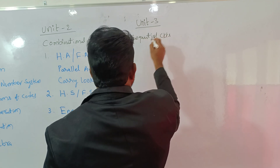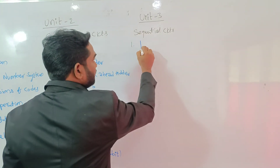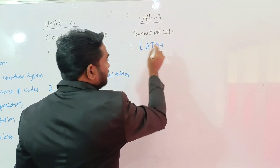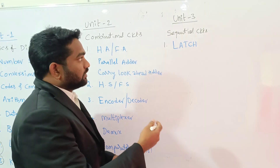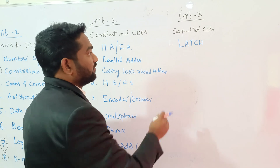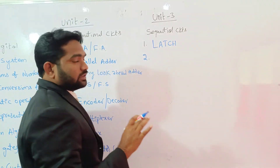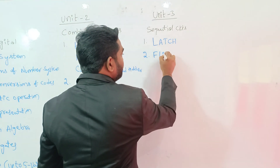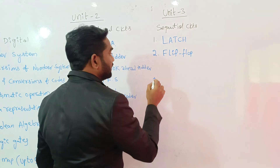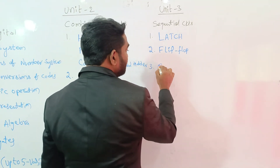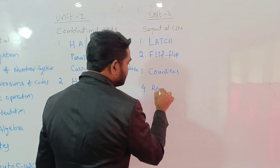In sequential circuits, the first part we will learn about is the Latch. Honestly speaking, a latch is a combinational circuit, but understanding its drawbacks helps us understand the importance of sequential circuits. After learning latch and its drawbacks, we go on to: first, Flip-Flop; second, Counters; and third, Registers.